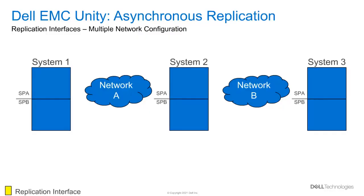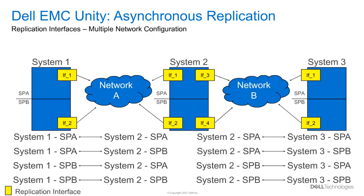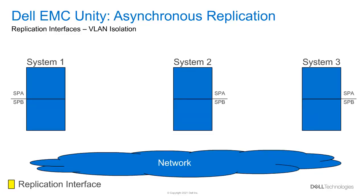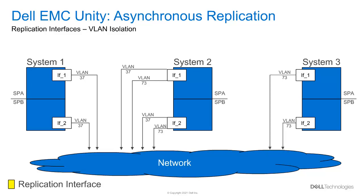Asynchronous replication can also be configured to systems connected to different networks. In this example, system 1 is connected to a different physical network than system 3. System 2 can replicate to both of these systems by connecting front-end interfaces to each network. Once the replication interfaces and the replication connections are made, the interface paths are created. Some networks use VLANs to isolate network traffic. Asynchronous replication also allows users to tag a VLAN on replication interfaces to override default VLAN settings on the network. In this example, system 1 replicates to system 2 over VLAN 37, while VLAN 73 is used for replication between system 2 and system 3. Multiple replication interfaces can also be created on the same physical port, and more complex networks are supported by mixing VLANs and multiple network configurations.